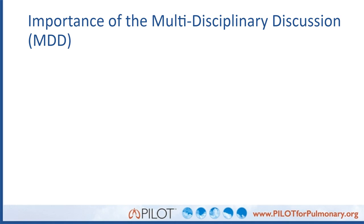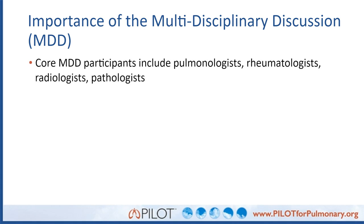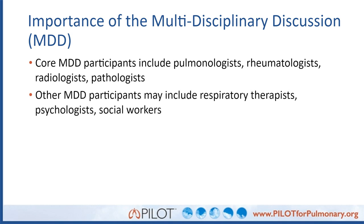I want to highlight the importance of a multidisciplinary discussion, involving pulmonologists, rheumatologists, radiologists, pathologists, and ancillary support such as respiratory therapists, psychologists, and social workers. Patients with interstitial lung disease can be challenging to diagnose and manage, and a multidisciplinary discussion with multiple specialties helps us become more confident in making the right diagnosis and treatment decisions. It's also important that these patients have good ancillary support with pulmonary rehab, respiratory therapists, and mental health support, as the effect of ILD on quality of life and mental health can be profound.